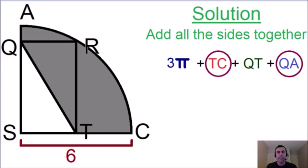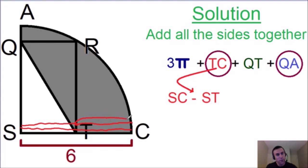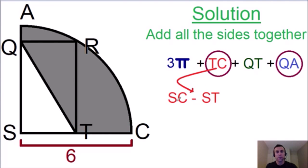Now let's find the lengths of sides TC and QA, starting with TC. Side TC is equal to SC minus ST. If we take the length of SC and subtract the length of ST, the only thing we're left with is side TC. Similarly, side QA is equal to SA minus SQ using this same concept.